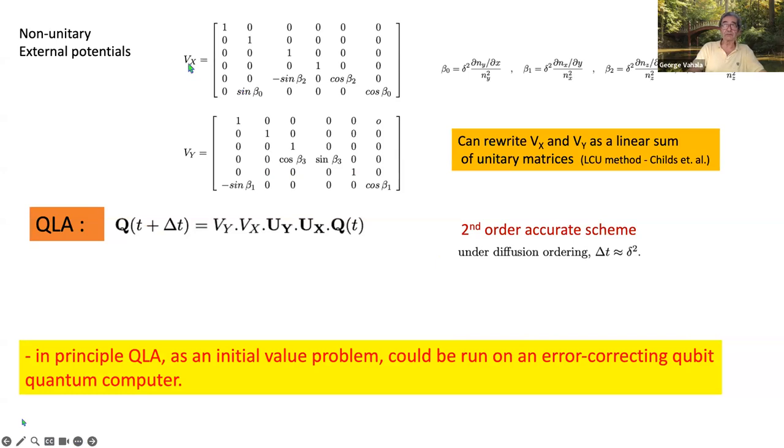Then you've got to account for the derivatives in the refractive index because it's an inhomogeneous system. And these are non-unitary. You can then approximate them by a linear combination of unitary matrices, a sort of standard trick that they use in quantum algorithms. Of course, on a classical supercomputer, you don't have to worry about that.